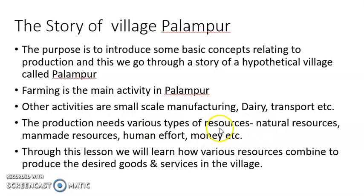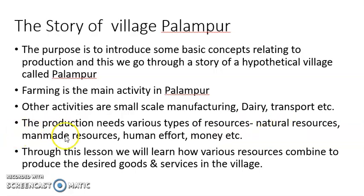Production needs various types of resources: natural resources, man-made resources, human effort, and money. Natural resources are what we get from nature. Man-made resources are those which human beings make with their own effort. Human effort means the effort taken by human beings. All these types of resources are required for any type of production.